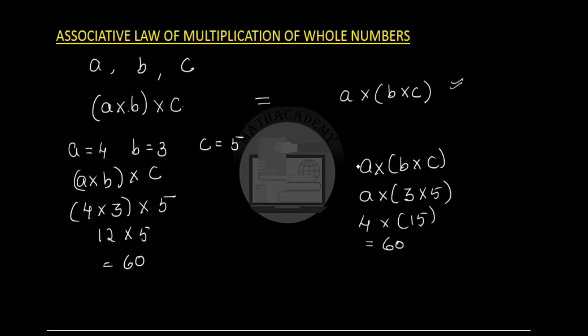Please remember that the closure property, the commutative property, and the associative property do not hold good for division. It is not necessary that when you divide two whole numbers you get a whole number as your answer — for example, 5 divided by 2 gives 2.5, which is not a whole number. Similarly, the commutative and associative properties also do not hold good for division.